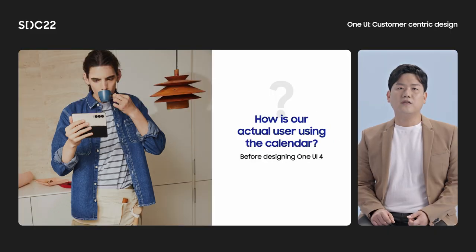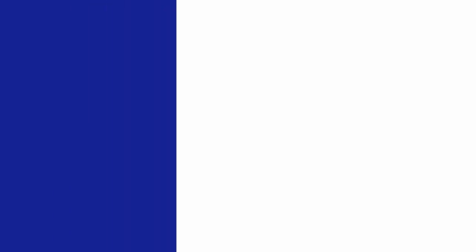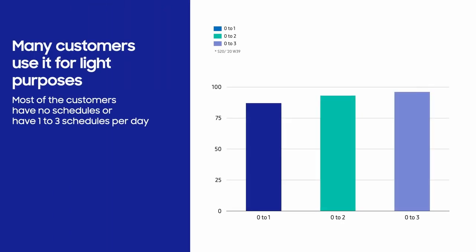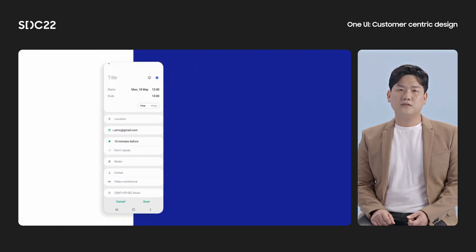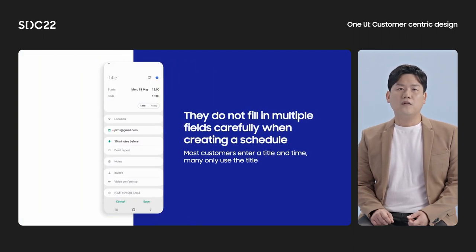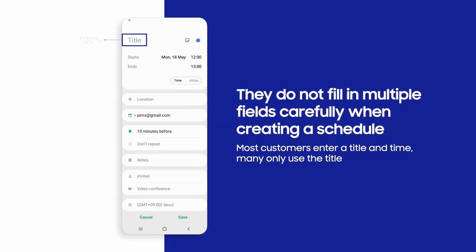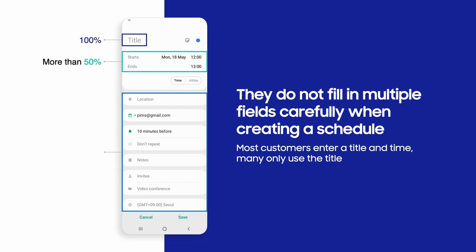So in One UI 4, we fundamentally changed how users view and add events. First, we studied how many events users add to their calendars. It turns out, most people have three events or fewer each day. Then we asked, how do users add events? We found that, although we offer many options for events, most users only enter the title and time of their event. They rarely add extras or use the other event settings we offered.